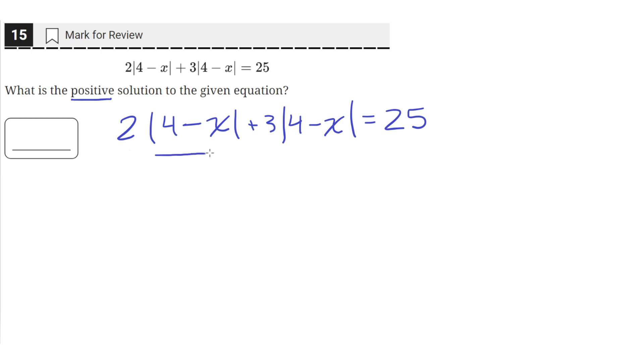We can see that this quantity right here, the 4 minus x, is common to both these terms, so we can factor these out. We'll factor out the 4 minus x and multiply it with the two coefficients, 2 and 3. We could add the 2 and 3 together to get 5 times this absolute value of 4 minus x equals 25.